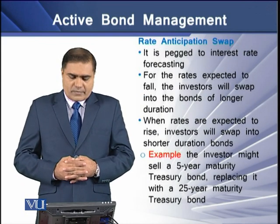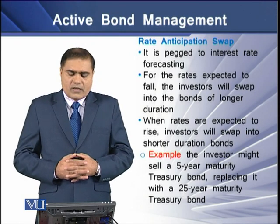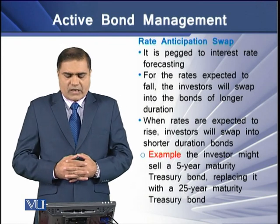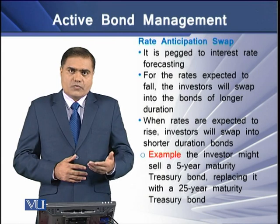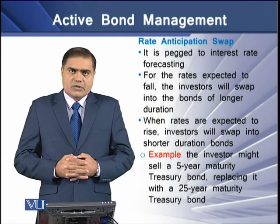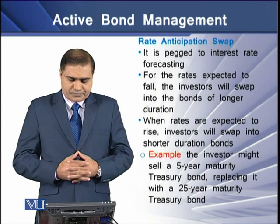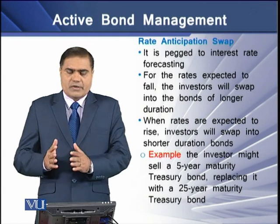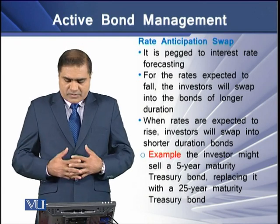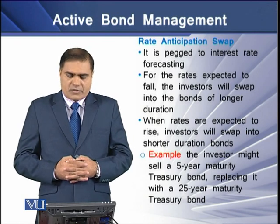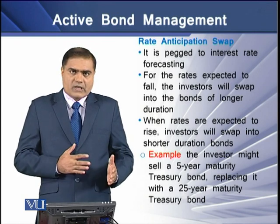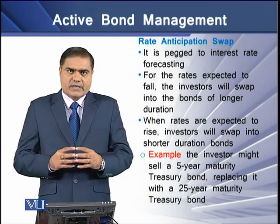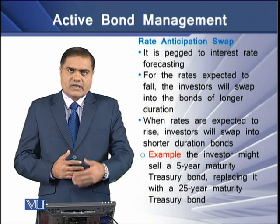The third type of swap is the rate anticipation swap, which is pegged to interest rate forecasting. For rates expected to fall, the investor will swap into bonds of longer duration. For example, an investor might sell a 5-year maturity treasury bond and replace it with a 25-year maturity treasury bond if he forecasts a change in interest rates in the days to come.